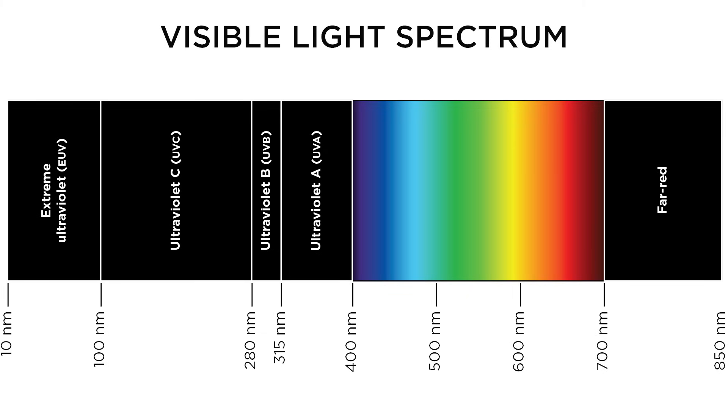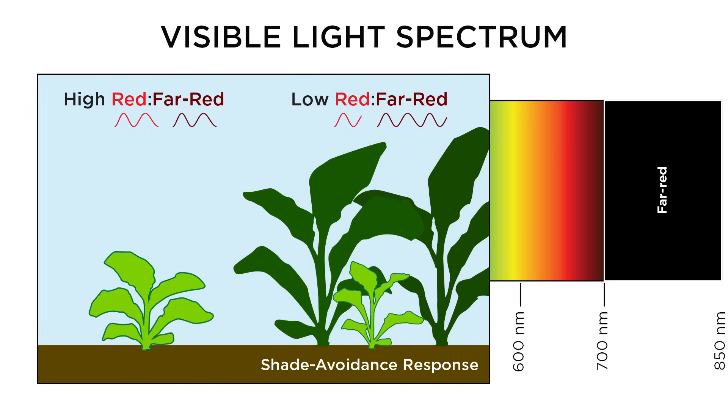Far-red does less to drive photosynthesis, but it can greatly affect plant development or morphology. For example, certain ratios of red to far-red can tell plants that they're under a canopy of taller plants, triggering them to grow taller in response.